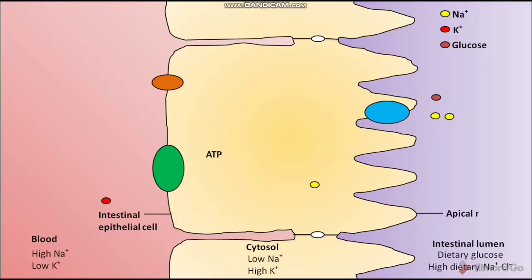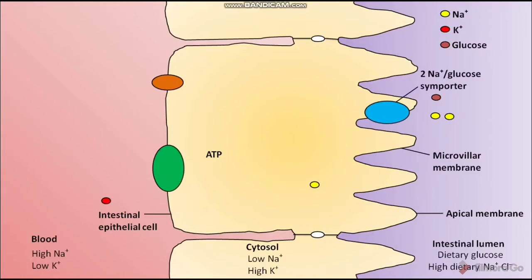This is the apical membrane of the intestinal epithelial cell. These apical membranes face towards the intestinal lumen. This portion of the intestinal epithelial cell is called the microvillar membrane. The microvillar membrane has two Na+/glucose symporters. In the first stage of transcellular transport, one glucose and two Na+ ions present in the intestinal lumen are symported by the two Na+/glucose symporters.